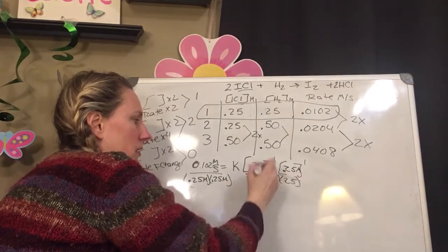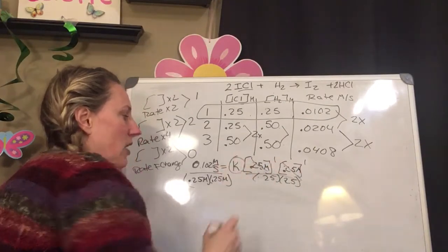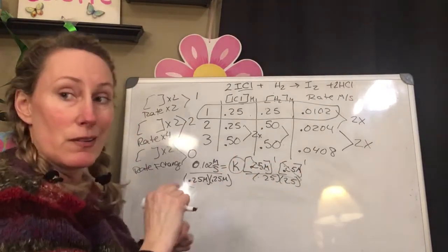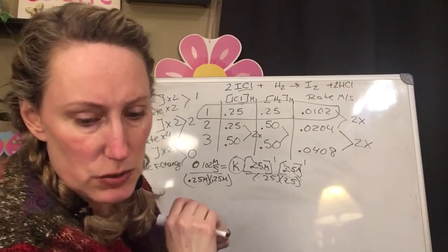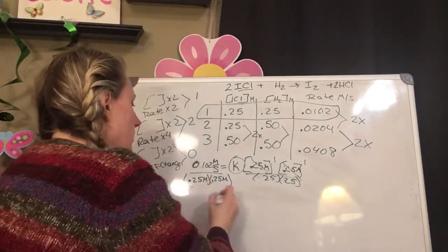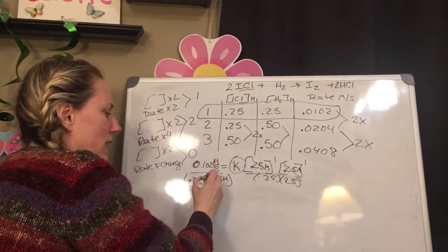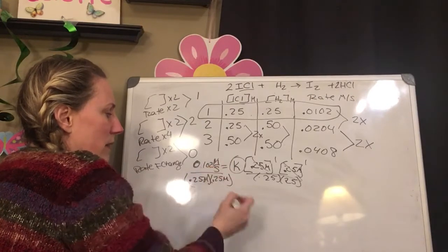So if you get your little handy-dandy calculator out, you should get that your k, in here you have an M on the top, you have an M on the bottom, you have an S on the bottom, and you have an M on the bottom.